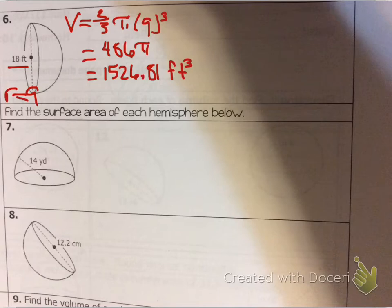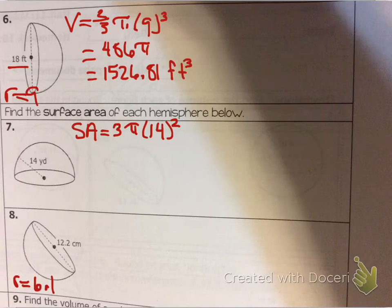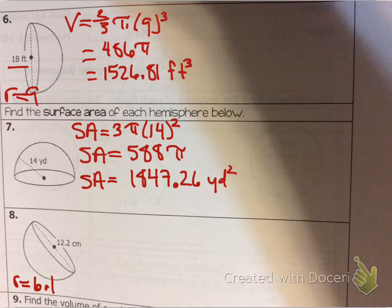Let's look at number seven or eight — they're basically the same thing. On number eight, if you divide by 2 you get 6.1 for the radius. Surface area of a hemisphere is 3πr². With radius 14: 3 times 14 squared — that's 3 times 196 — gives 588π. Times π gives 1847.26 square yards.